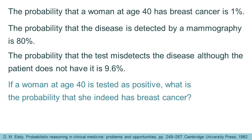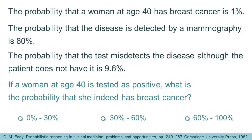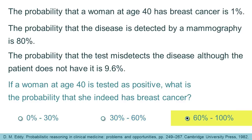We could find the exact answer if we want, but this is not what happens in real life. In real life, we just need a good approximation. So, considering this, which one of these do you think is correct? Is it 0-30%, is it 30-60%, or is it 60-100%?